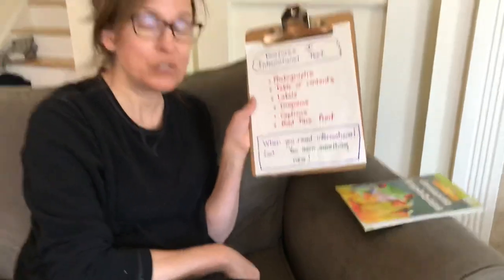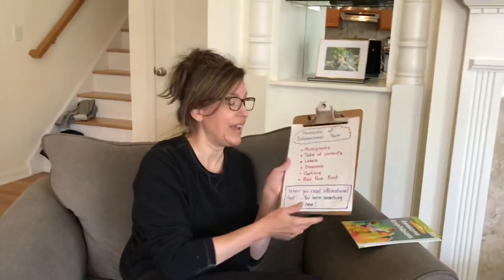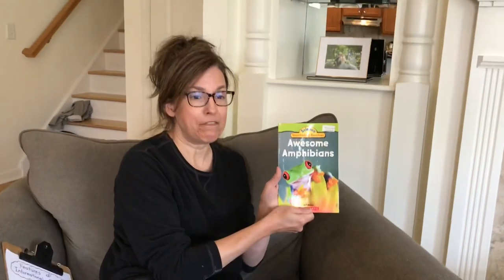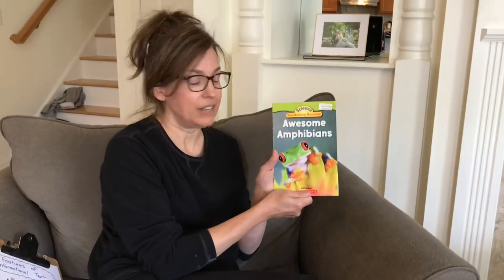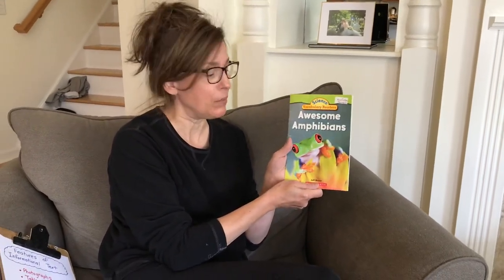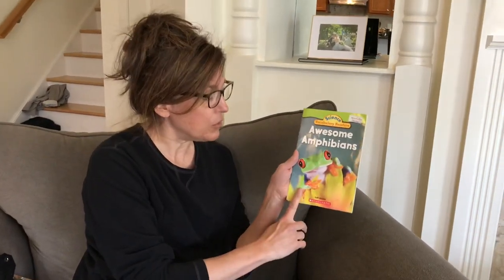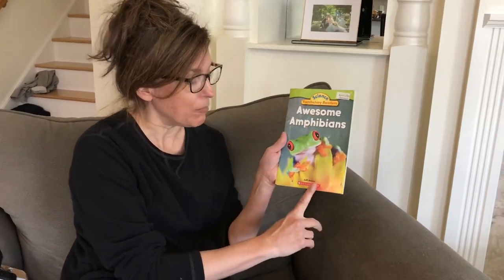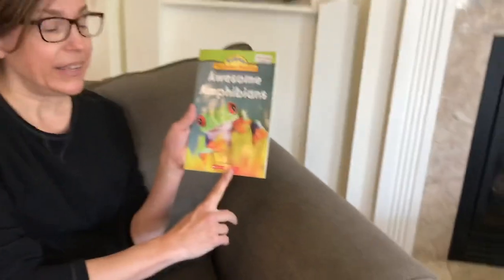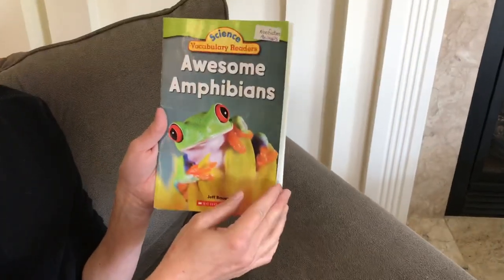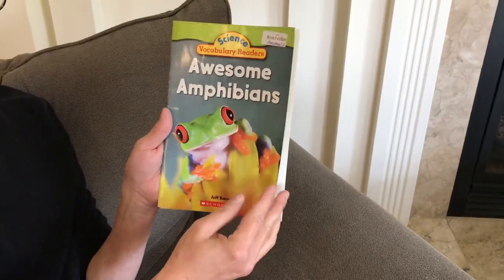Let's look for those features in our book today. Our book today is called Awesome Amphibians. And if you don't know what those are, you're about to find out. Awesome Amphibians was photographed by Jeff Bauer. He used a camera to take the pictures. Let's get reading.